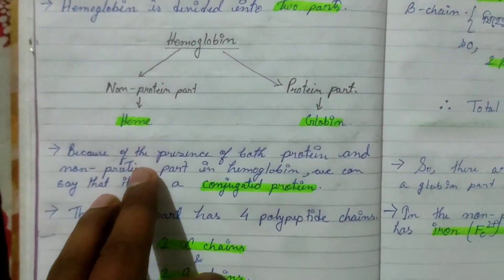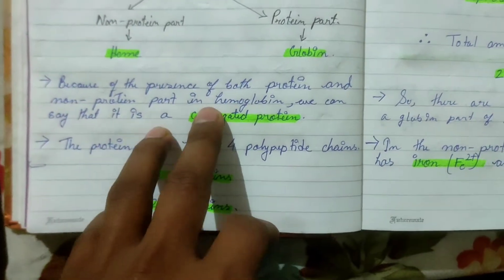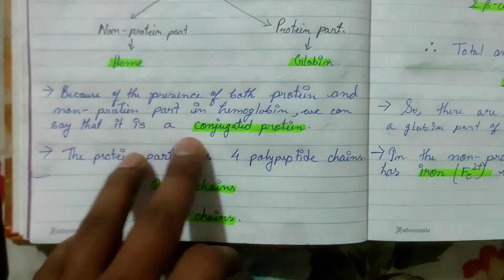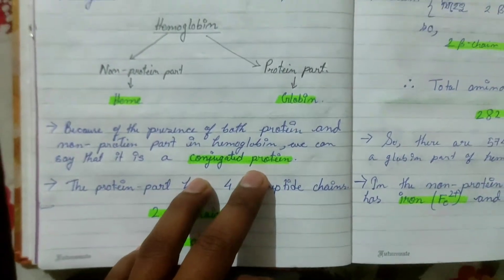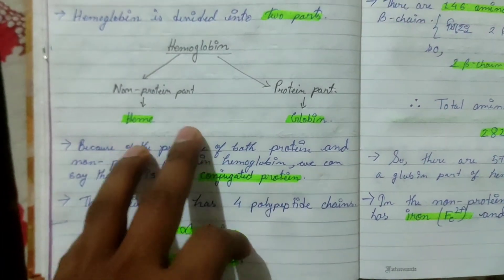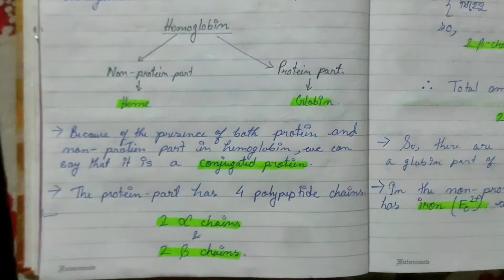Because of the presence of both protein and non-protein parts in hemoglobin, we can say that it is a conjugated protein.